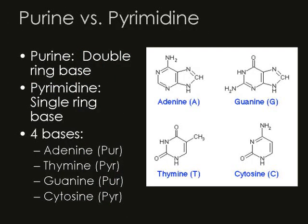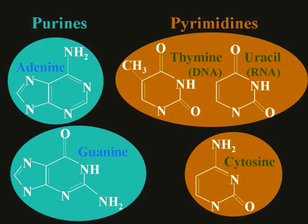Nucleotides come in two varieties: purines, which have double rings, and pyrimidines, which only have a single ring. The four bases present in DNA are adenine and guanine, which are your purines with two rings, and thymine and cytosine, which are your pyrimidines with only one. Here's a closer look at the purines and pyrimidines — notice adenine and guanine have two rings, while thymine and cytosine have only one. There's also uracil, which is a pyrimidine used in RNA, and we'll talk about that more later.